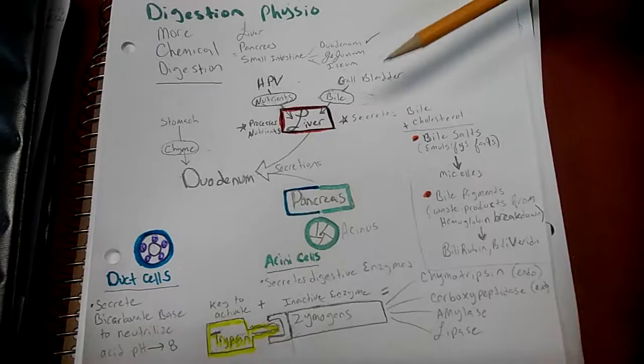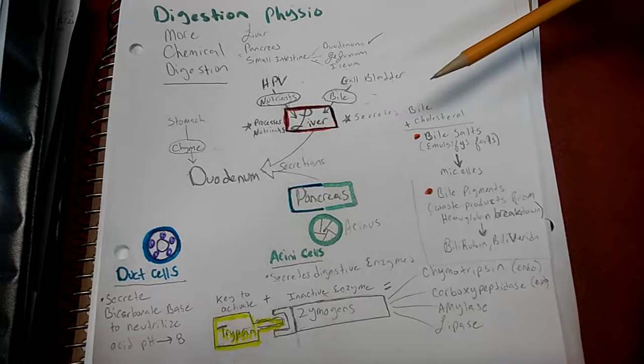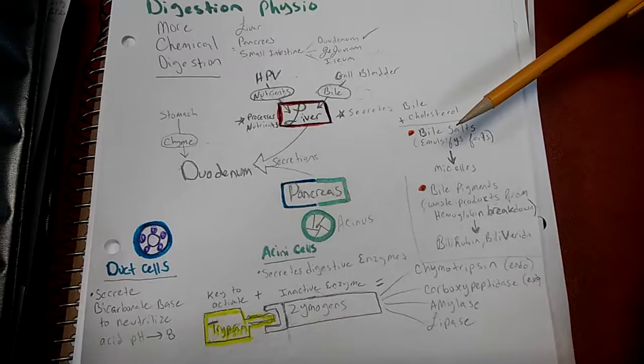The gallbladder excretes bile into the liver, and then the liver secretes bile combined with cholesterol to make bile salts, which emulsify fats.